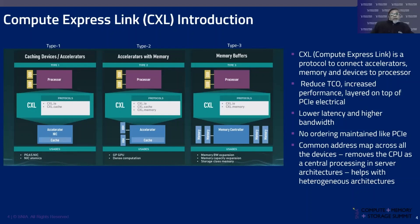CXL defines three types of devices: Type 1 is for caching devices and accelerators; Type 2 is for accelerators with memory; and Type 3 is for memory buffers, which allows increasing the amount of memory that a single-socket or multi-socket server can support.